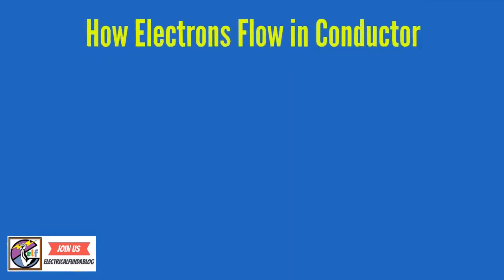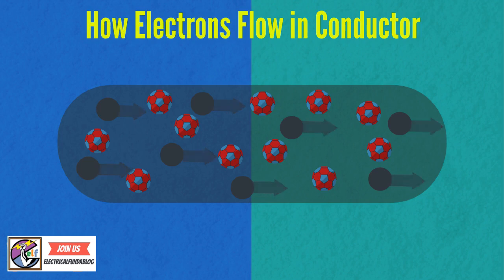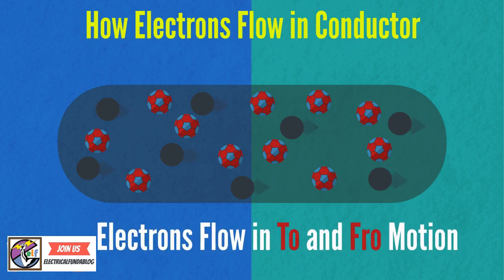Now the question is, how do electrons flow in a conductor? Electrons flow in to and fro motion with their drift velocity or random velocity. There's collision between atoms and other electrons.